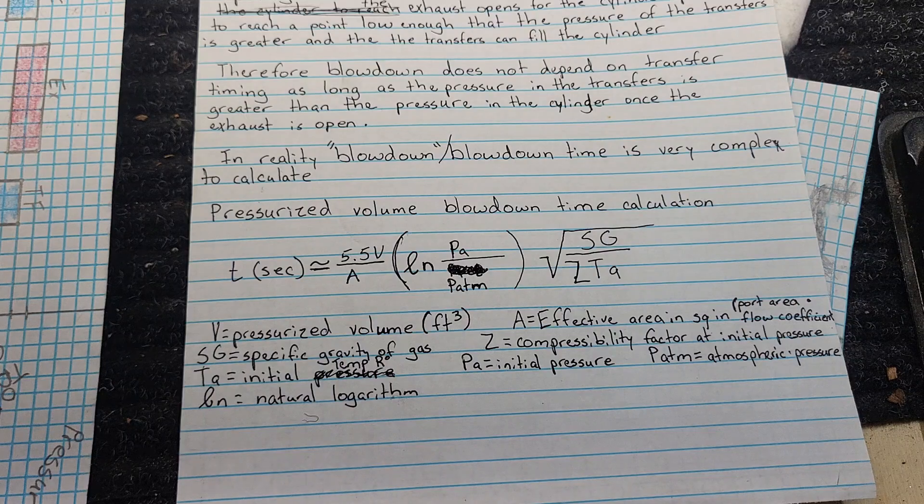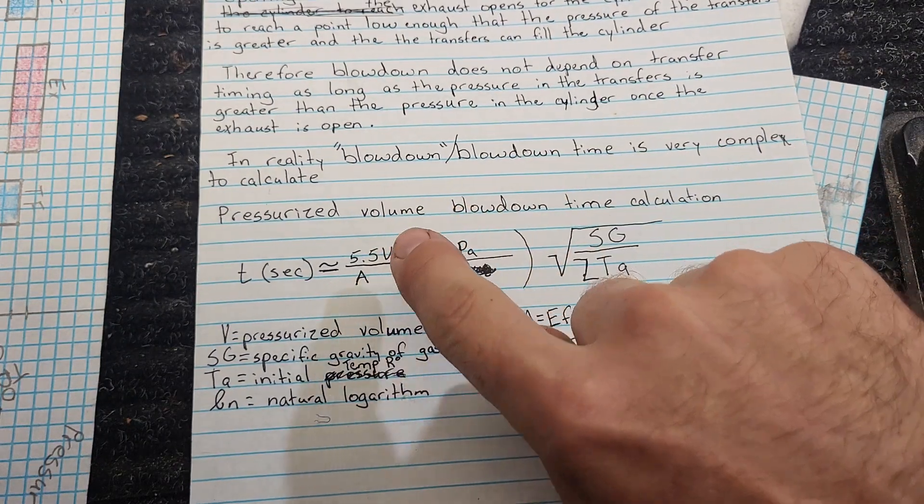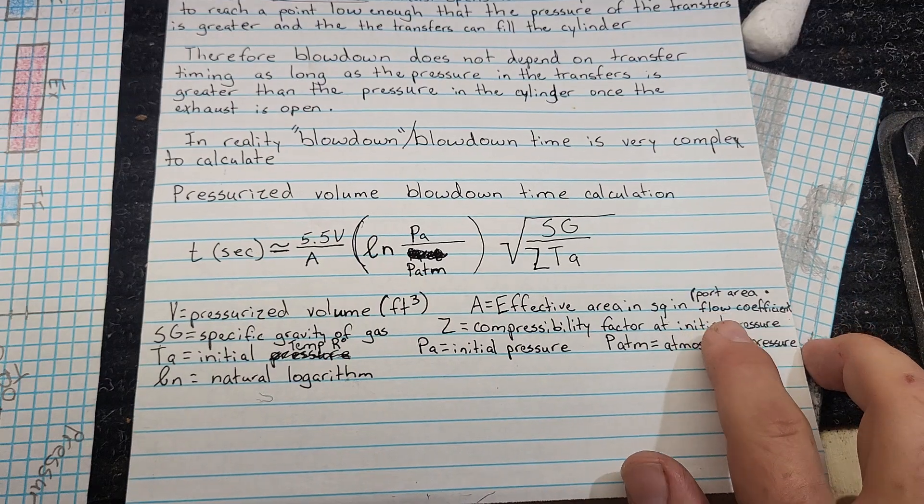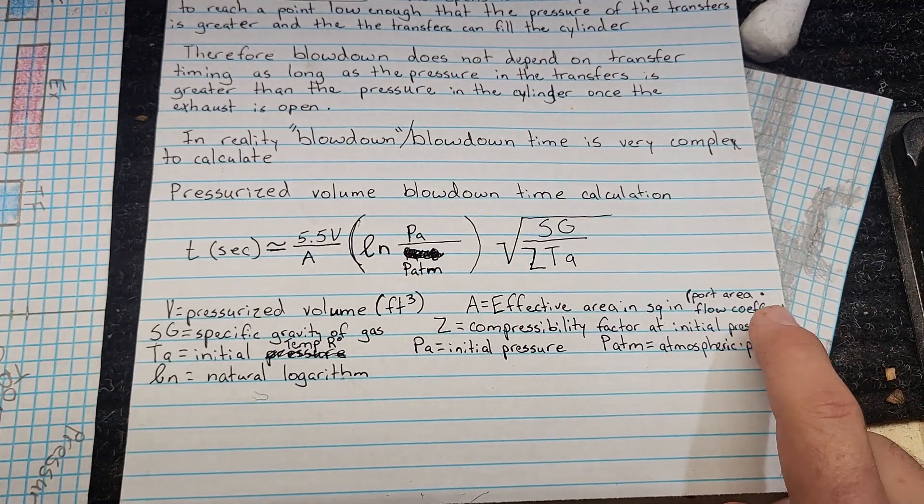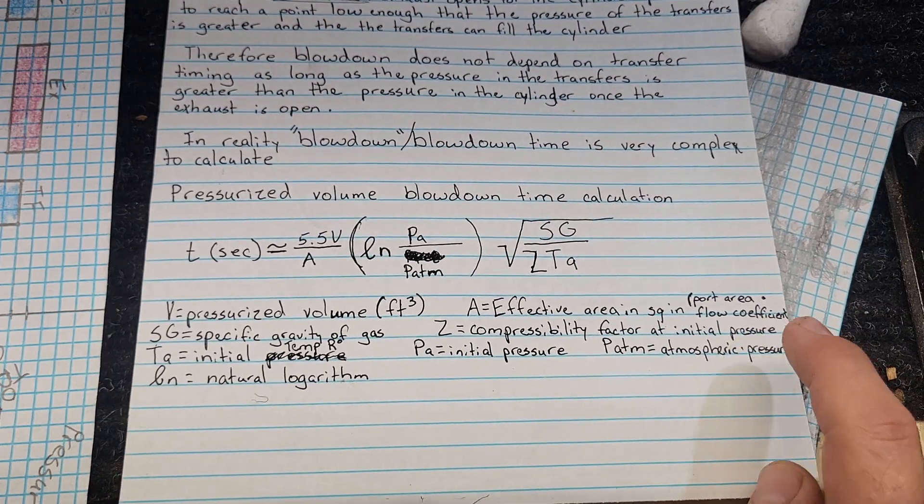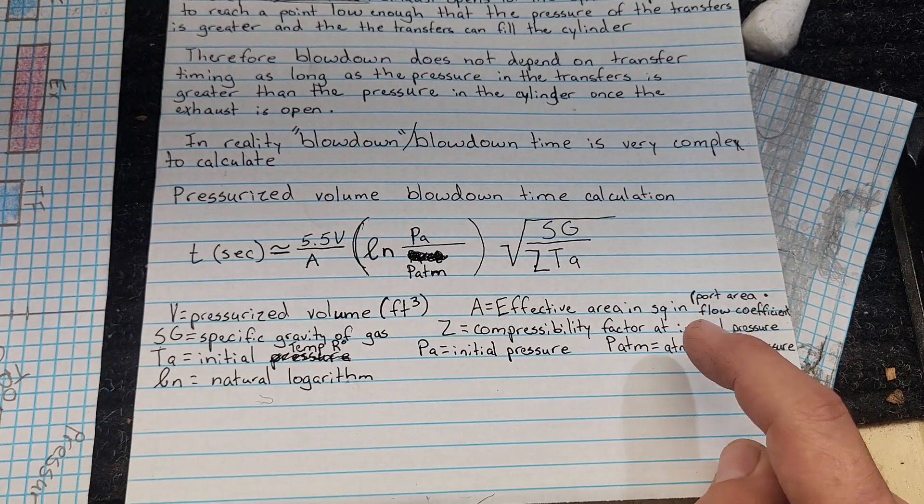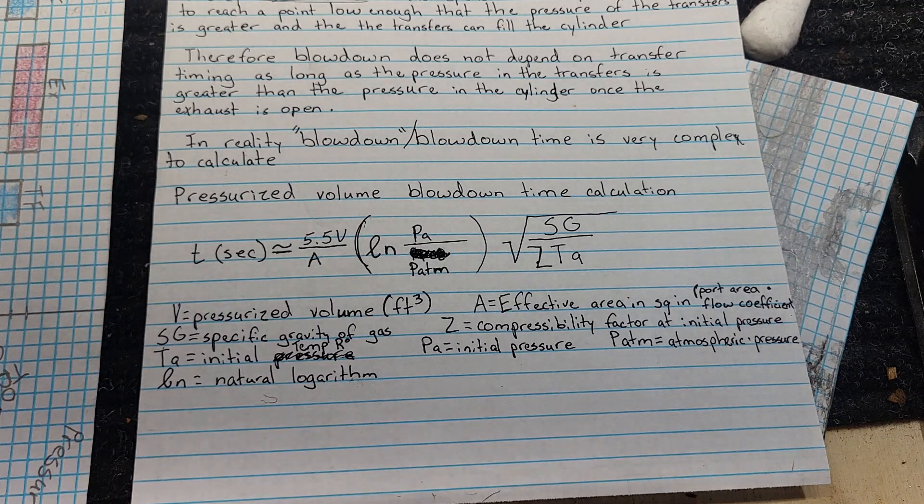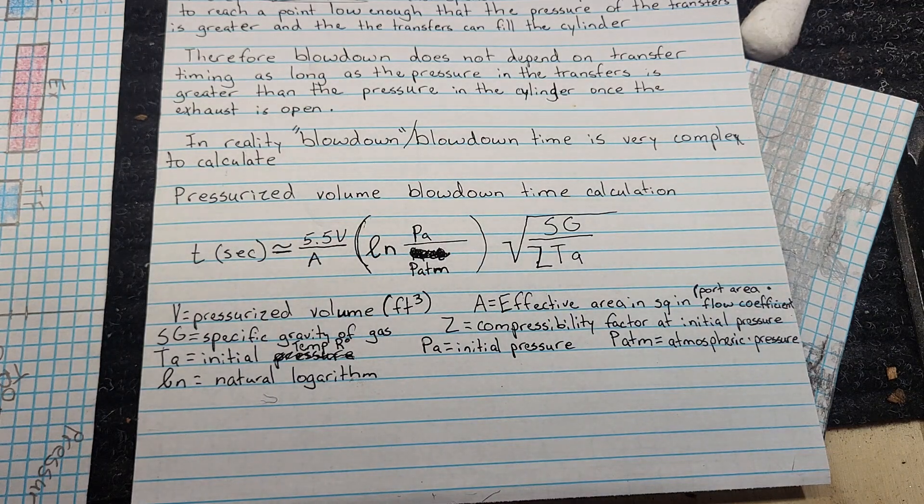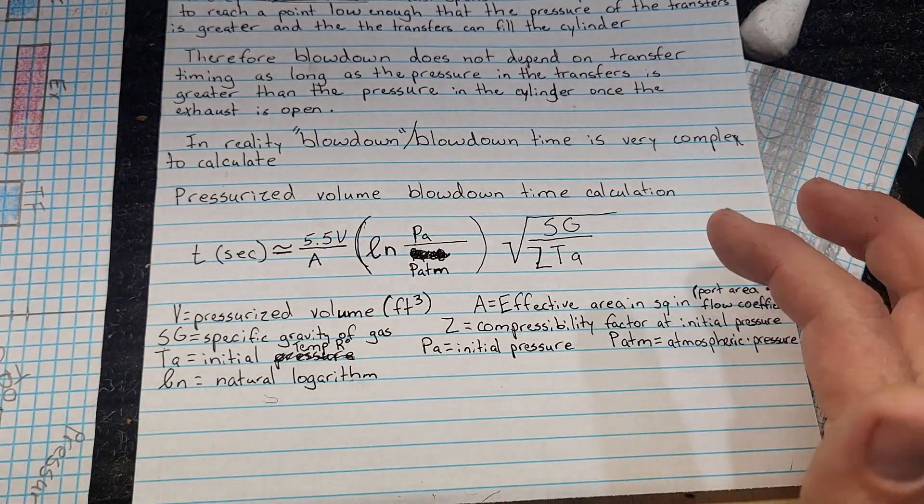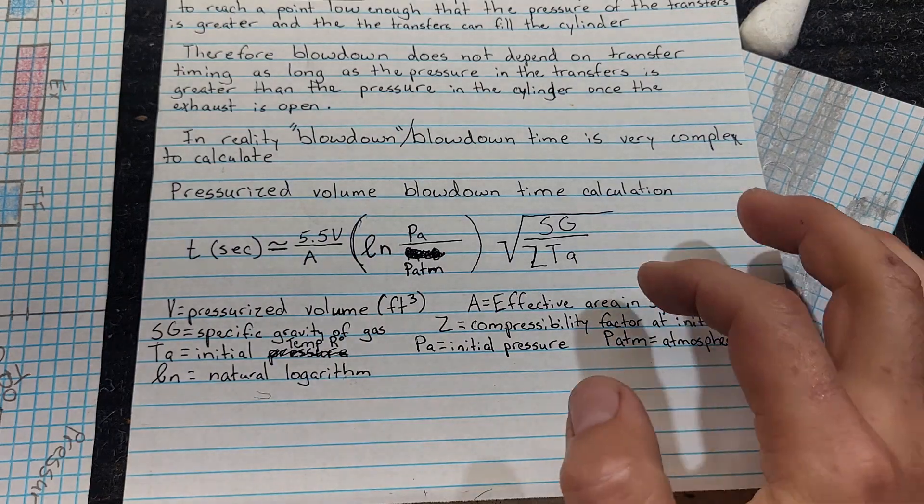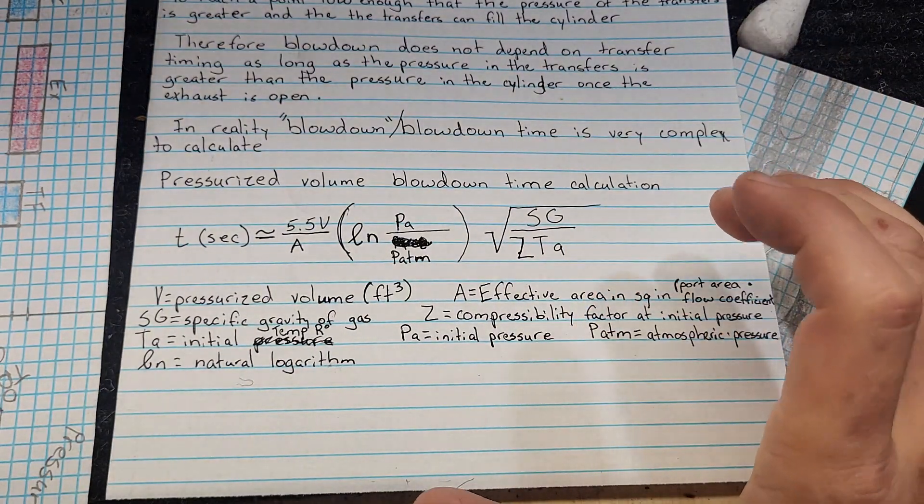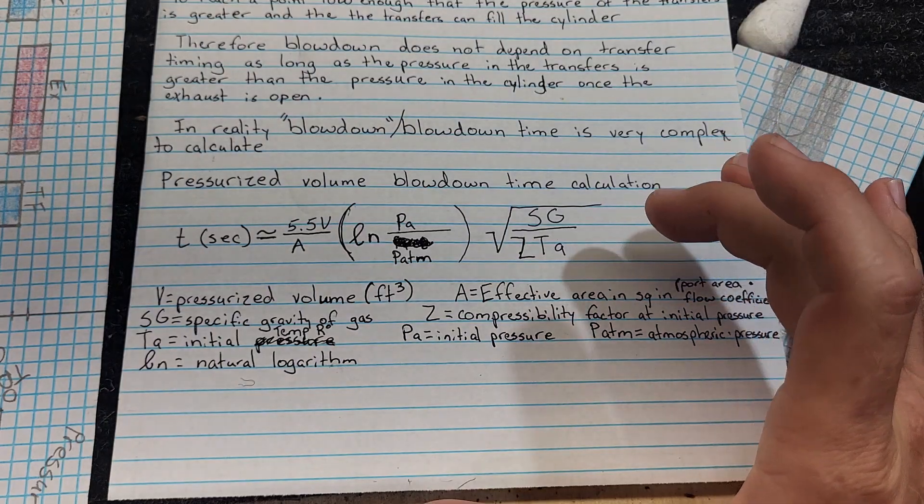What this equation is is going to be 5.5 times your pressurized volume over the effective area of your port, which that's going to take into effect, that's your port area times a flow coefficient, because the effective area is not the same as the port area itself. And it says if you don't know your flow coefficient, you're supposed to use 0.85 as the flow coefficient, times the natural logarithm of your initial pressure over atmospheric pressure times the square root of the specific gravity of the gas over the compressibility factor at initial pressure.